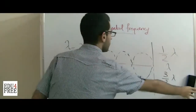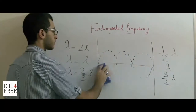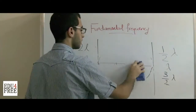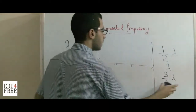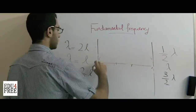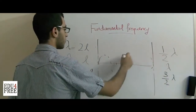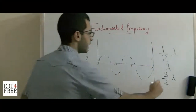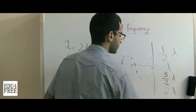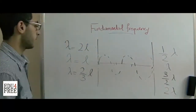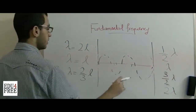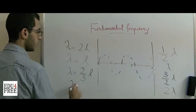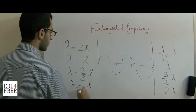And finally, we have a crest, a drop, a crest, and a drop — so we have two complete wavelengths. The wavelength will equal L over 2.